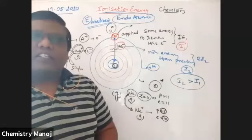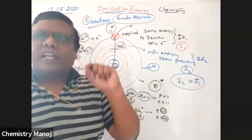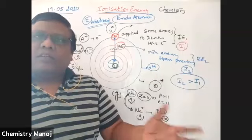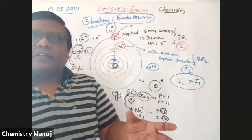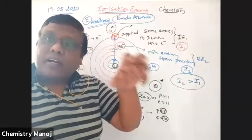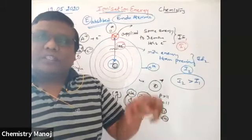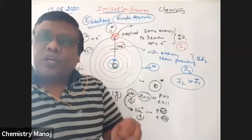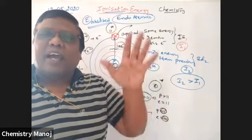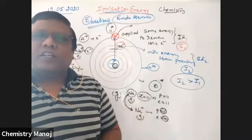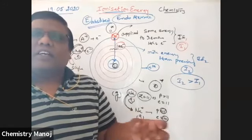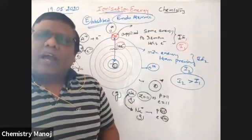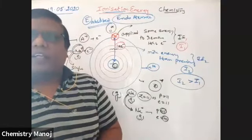Second ionization enthalpy is always greater than first ionization enthalpy. After one electron is lost, the entire positive charge strongly attracts the remaining electrons, requiring more energy to remove the next electron. This is due to high nuclear charge. Therefore I₃ > I₂ > I₁, and I₄ > I₃ > I₂ > I₁.